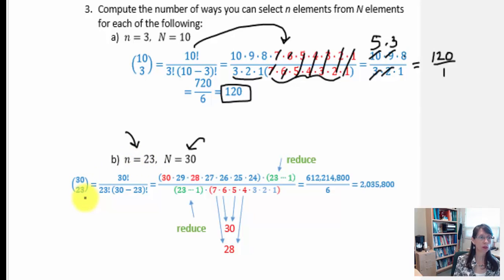So we have 30 over 23 in the combinatorial notation. 30 factorial is the numerator. 23 factorial multiplied by capital N minus n. So 30 minus 23 will leave us 7 factorial.